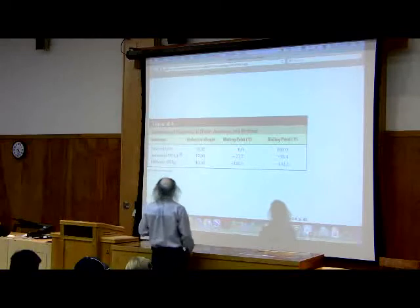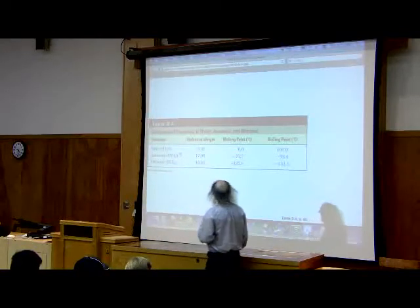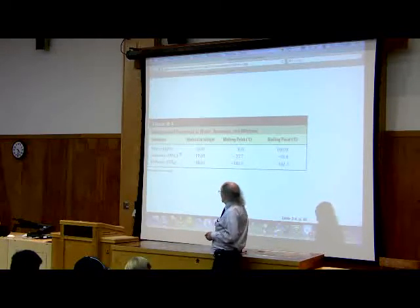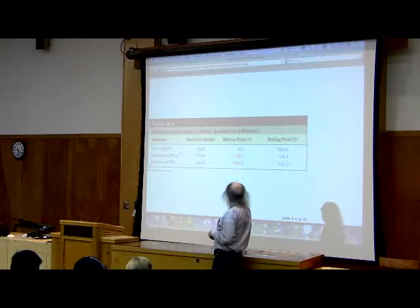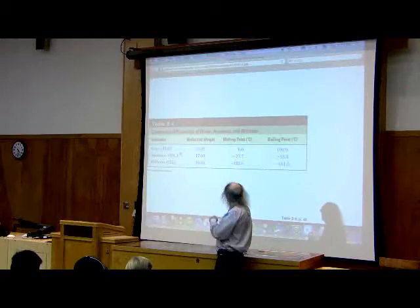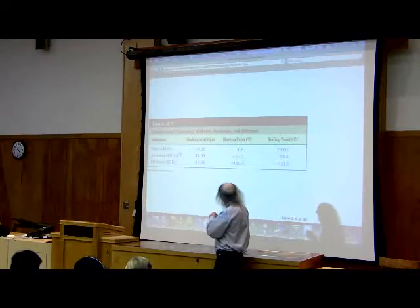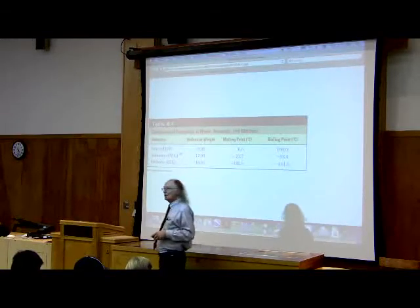Zero degrees centigrade for water, minus 77 degrees centigrade for ammonia, and minus 182 for methane. The same things are reflected in their boiling points. Water the highest, ammonia middle, and methane the lowest.